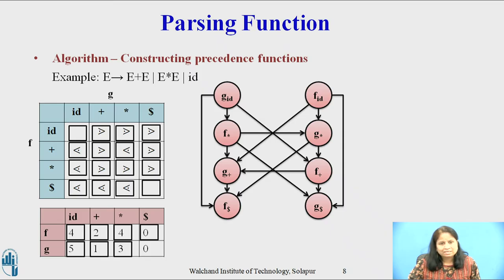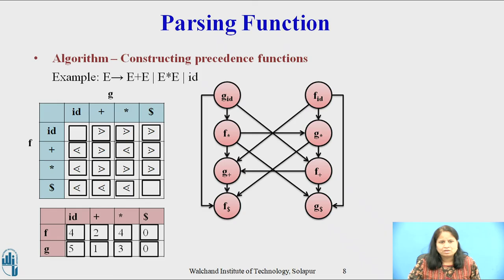As there is no relation between f(dollar) and g(dollar), the entry for f on dollar in the matrix is 0, and the entry for g on dollar in the matrix is also 0.